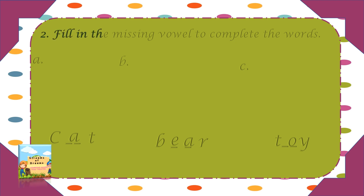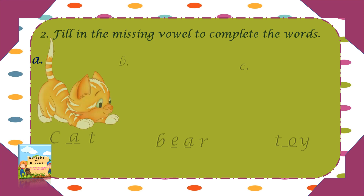Let's do some more exercise. Fill in the missing vowels to complete the words. Now here we are looking at some pictures. Watch the picture carefully. Let's see — C, a, t — cat.